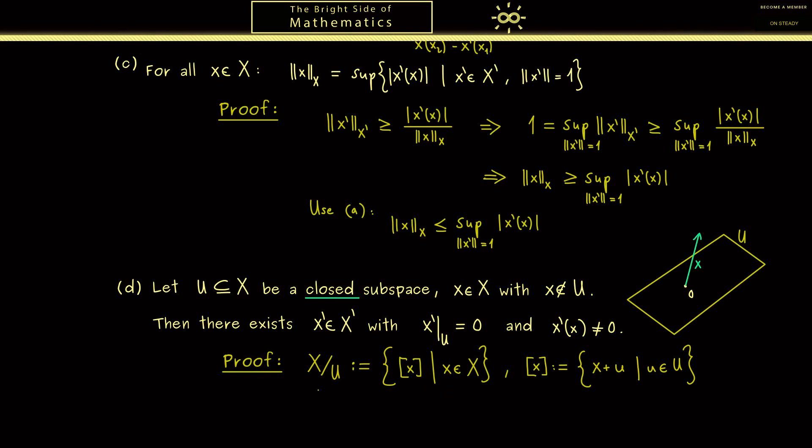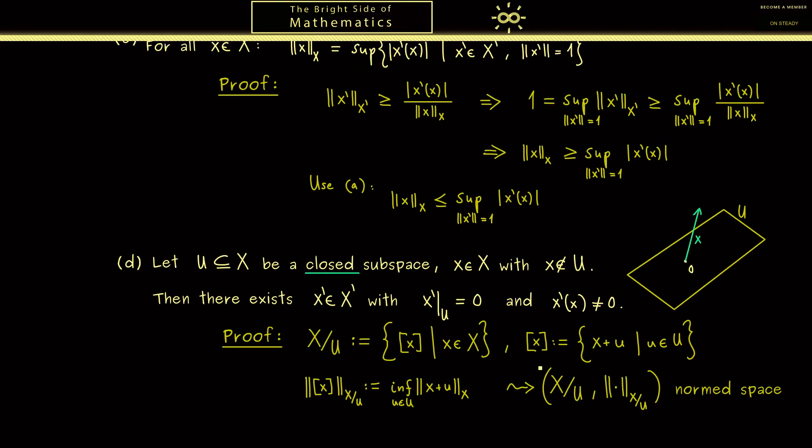Since we have a norm in X there is a canonical choice of a norm in X/U. It's simply given by putting all possible vectors you have in the equivalence class, meaning x+u, and taking the infimum. I don't fill in the details but what you get out is a normed space. Now since we got rid of the possibly large subspace U by using this construction we simply can use the statement (a) again.